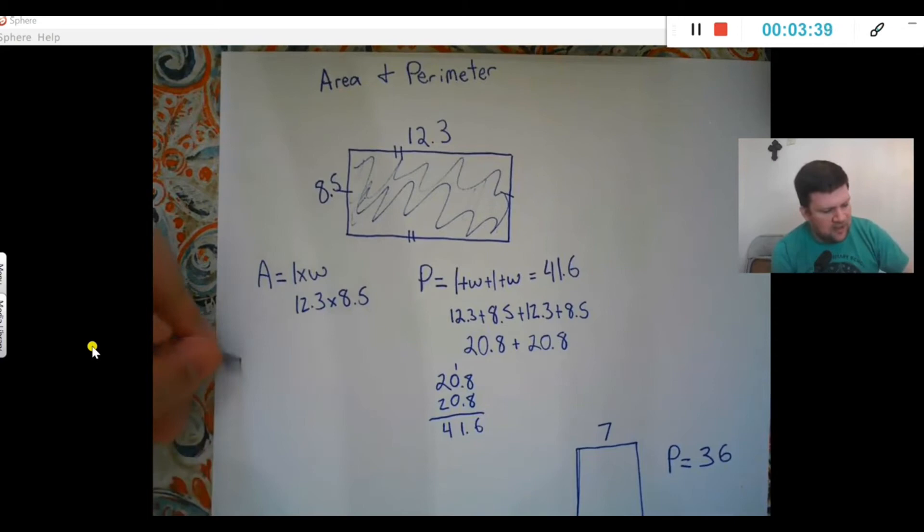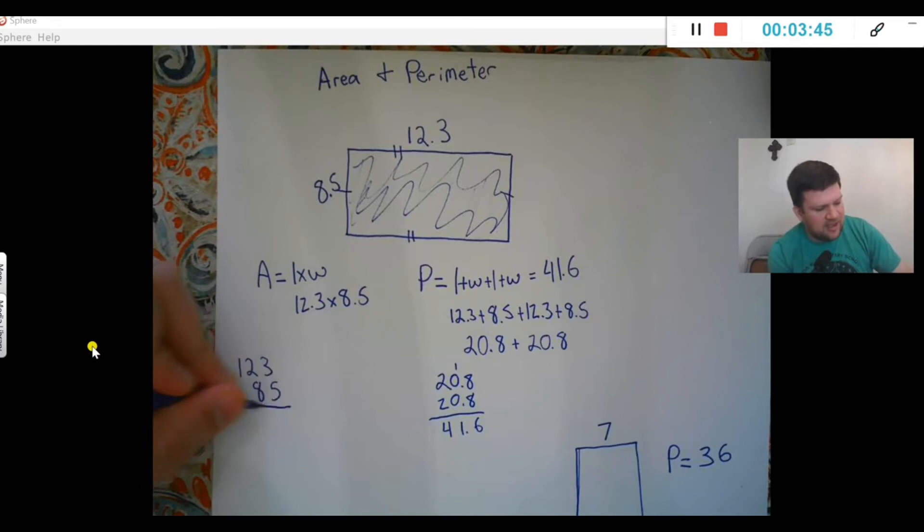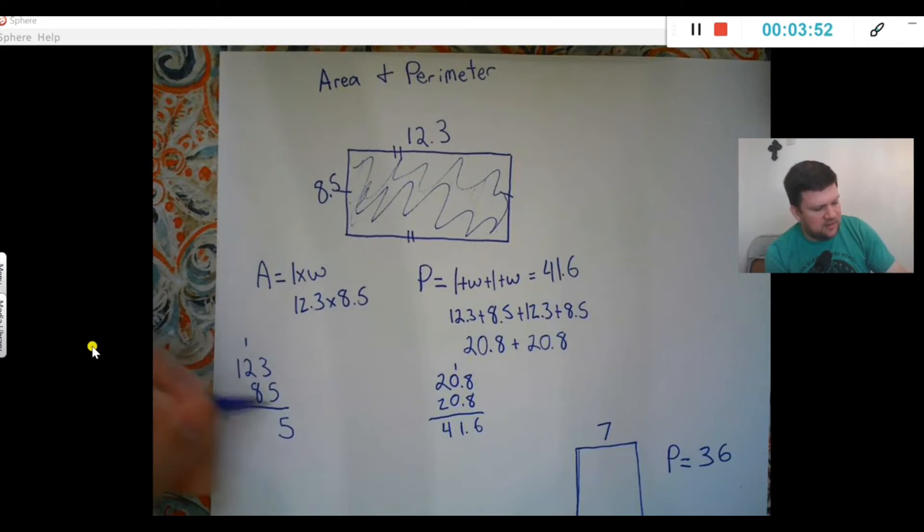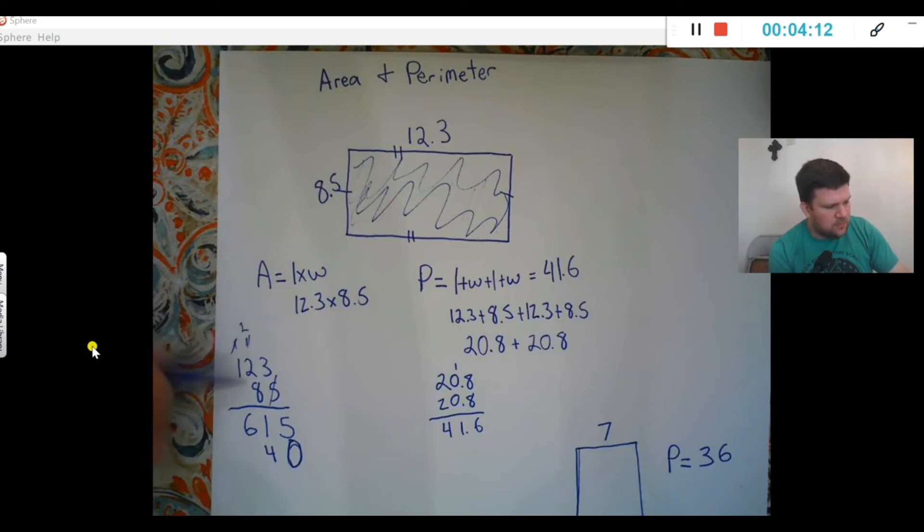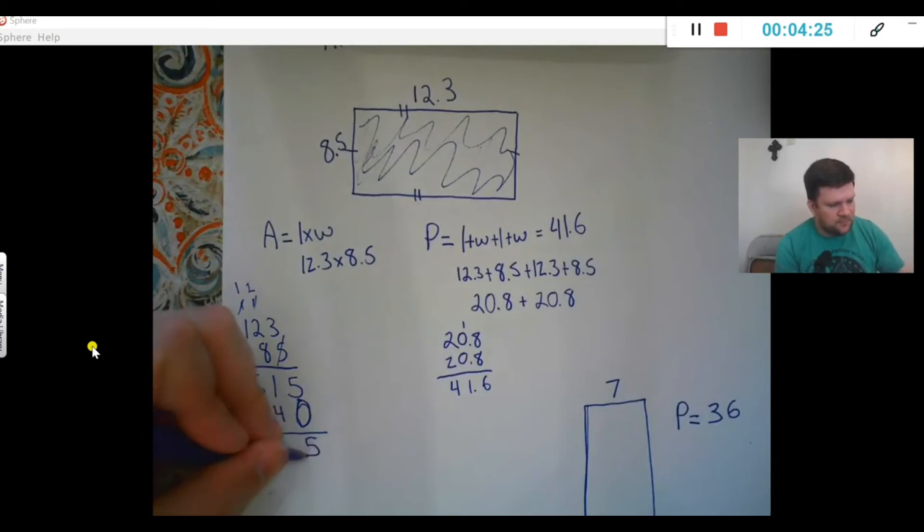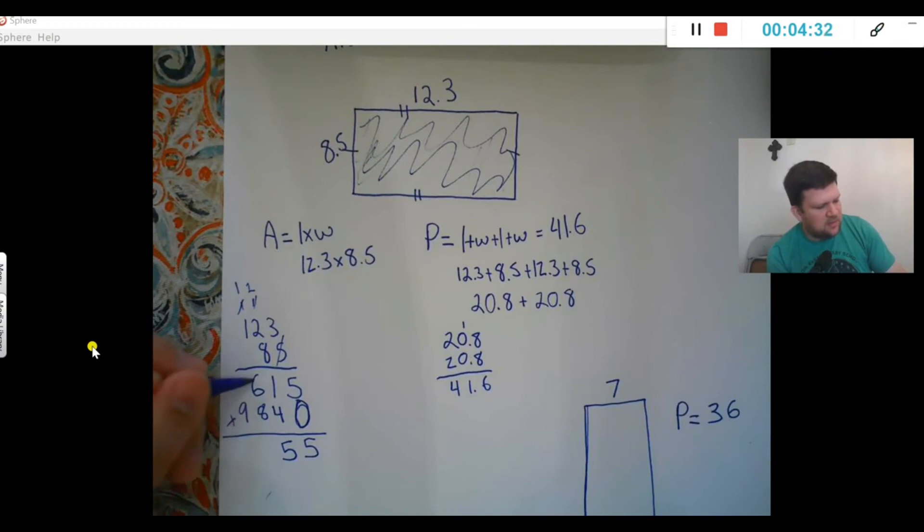This gives us a good review for multiplying decimals too. Remember, the way we've done it is to start out, I'm just going to do 123 times 85, multiplying it just like they're whole numbers. Five times three is fifteen, carry... five, ten, eleven, five, six... zero the hero, work all that out. Times three is twenty-four, eighteen, and I'll add that together.